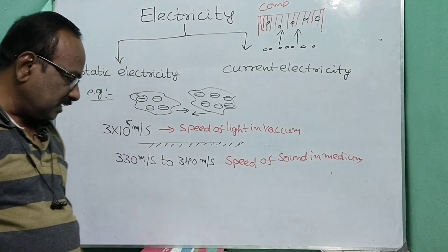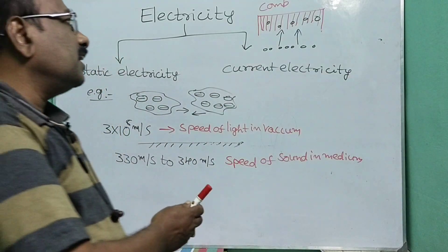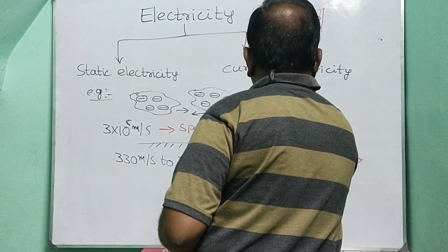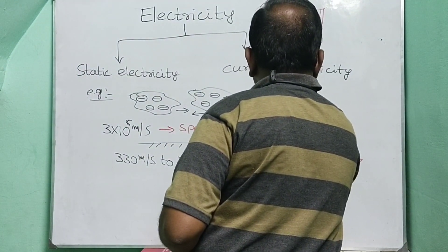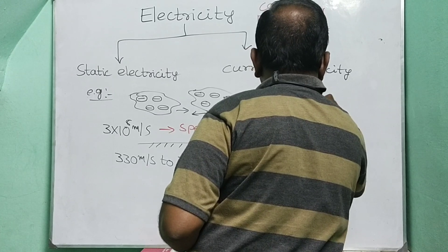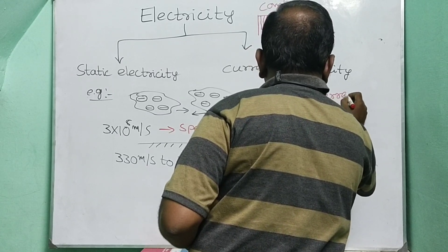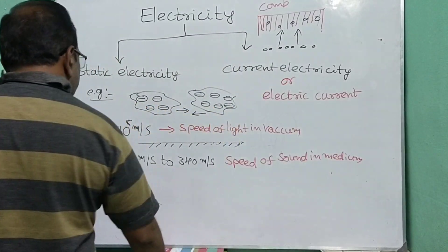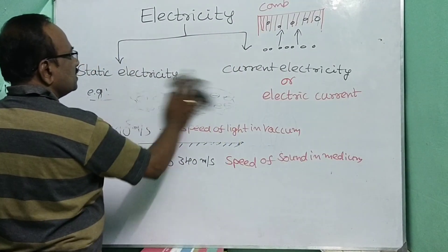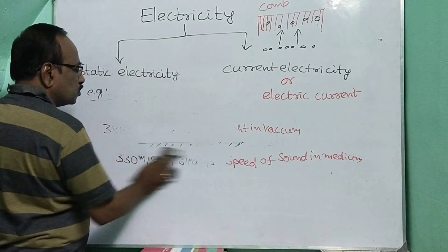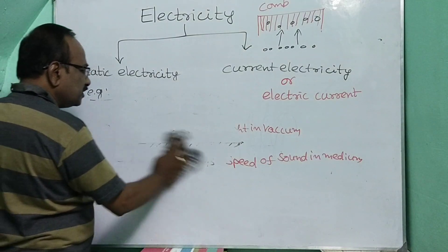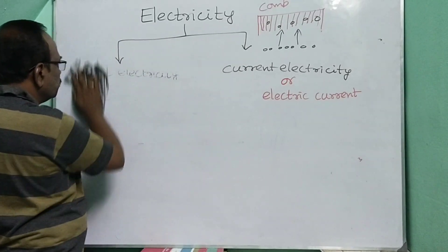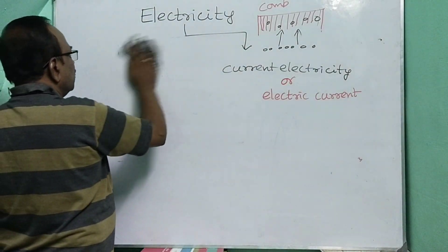Now, current electricity, also called electric current. What is electric current? The net charge flowing through the cross-section of a conductor in unit time is called electric current. This is the original definition — you must write this definition in examinations. This is a compulsory question.